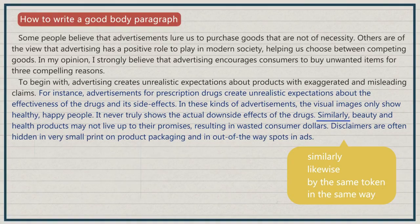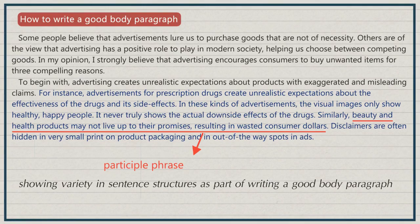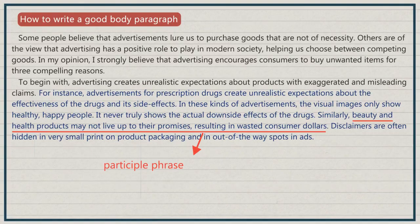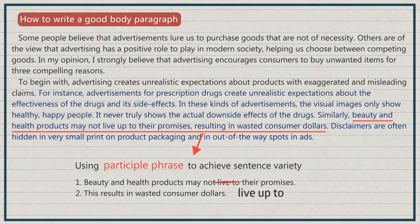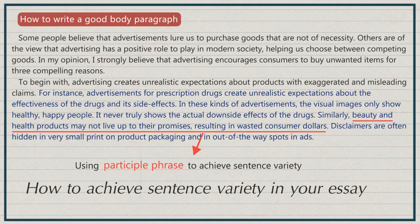Also, pay attention to the sentence: 'beauty and health products may not live up to their promises, resulting in wasted consumer dollars.' Here, the participle phrase is used. Remember when we talked about showing variety in sentence structures as part of writing a good body paragraph? Here's a perfect example using the participle phrase to achieve sentence variety. Without the participle clause, the sentence is broken up into two independent sentences: 'Beauty and health products may not live up to their promises. This results in wasted consumer dollars.' If you want to learn more about how to show variety in sentence structure and grammar, check out our video 'How to Achieve Sentence Variety in Your Essay.'